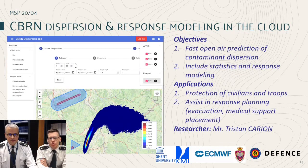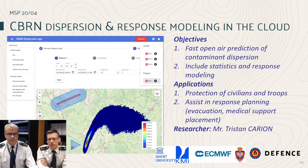A second project is about CBRN dispersion and response modeling in the cloud. The objective is to get a fast large-scale model that we can run immediately after an accident or an attack has happened. A particular aspect of this project is that it runs on the cloud services of the European weather forecasting service, which means we have immediate and up-to-date access to global forecast data so we can simulate an attack.